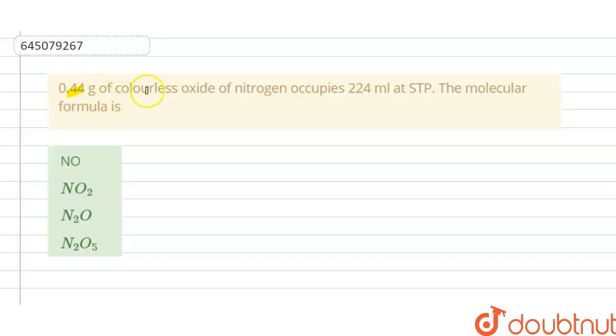0.44 gram of colorless oxide of nitrogen occupies 224 ml at standard temperature pressure. The molecular formula is NO, NO2, N2O, N2O5. So we have to choose the correct option. The solution of this question is